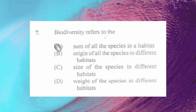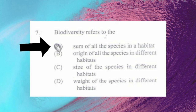Question number seven: biodiversity refers to the a) sum of all the species in a habitat. The answer is a). Biodiversity refers to all the living things found in an environment and how they relate to their habitat. A habitat is a natural home for organisms, such as forests or soil.